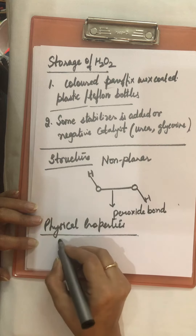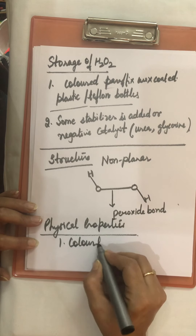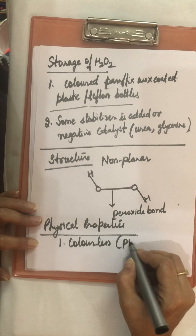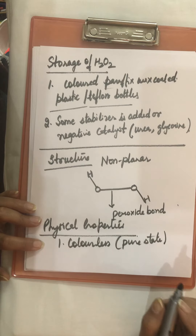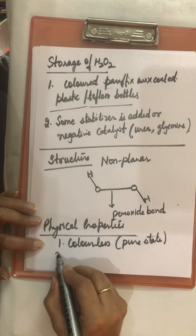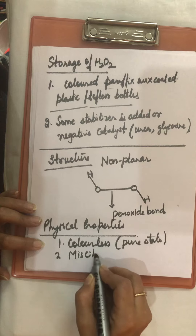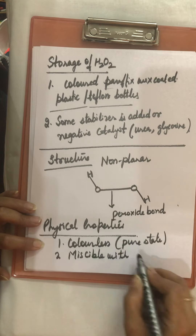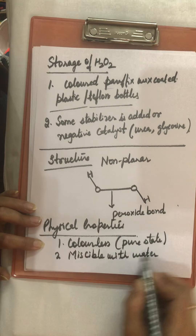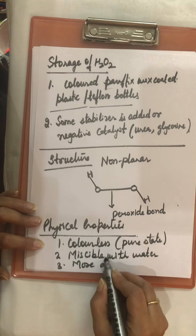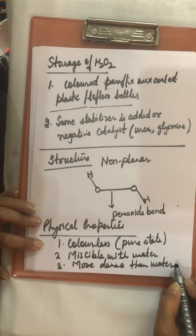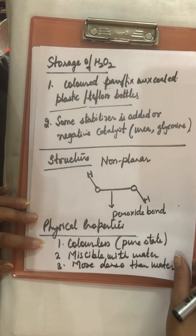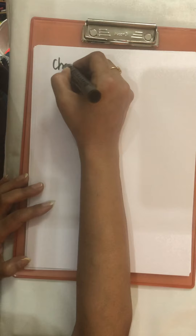Physical properties of H₂O₂: it is colorless in its pure state, but in liquid form it has a pale blue color. It is completely miscible with water, and it is more dense and more viscous than water.